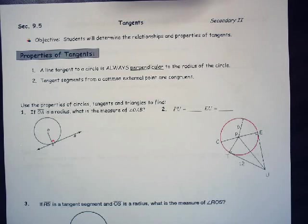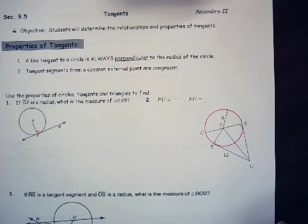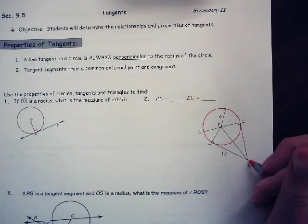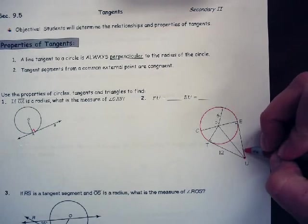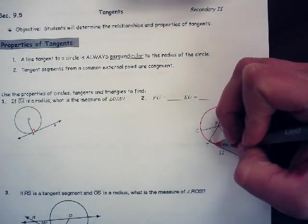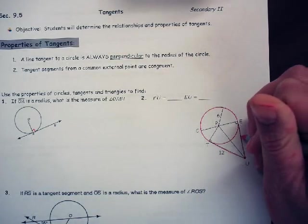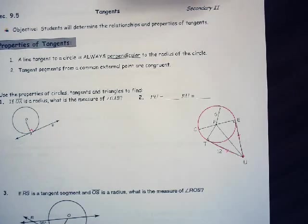Another property of tangents is that tangent segments from a common external point are congruent. So let's look at number 2 as an example. I have a common external point, which is U. I have a tangent line that goes here to E, and then I have a tangent line that goes UT. The theorem states that those two segments are congruent.